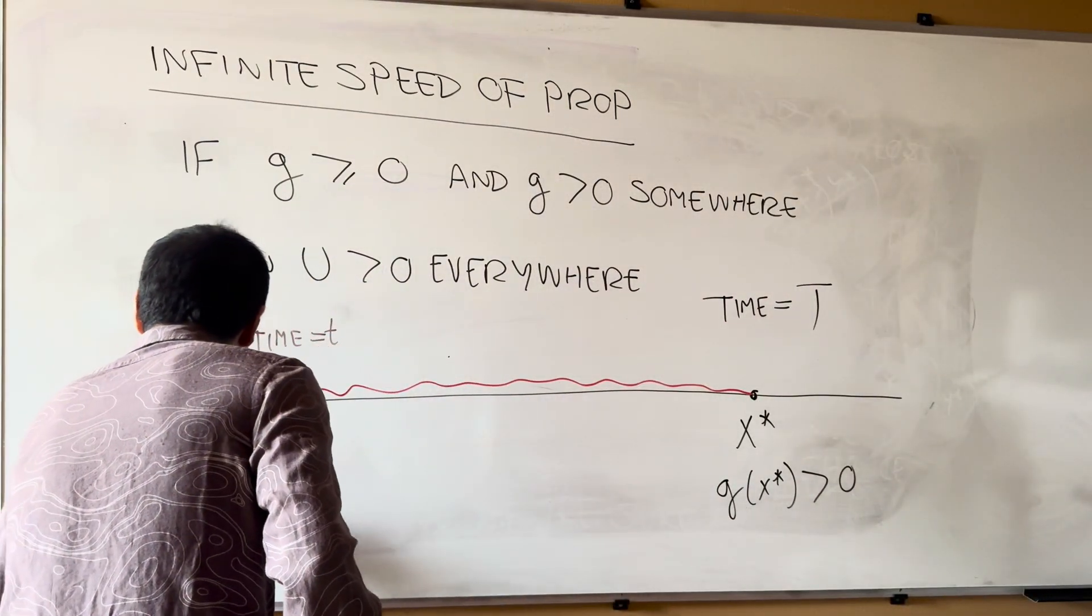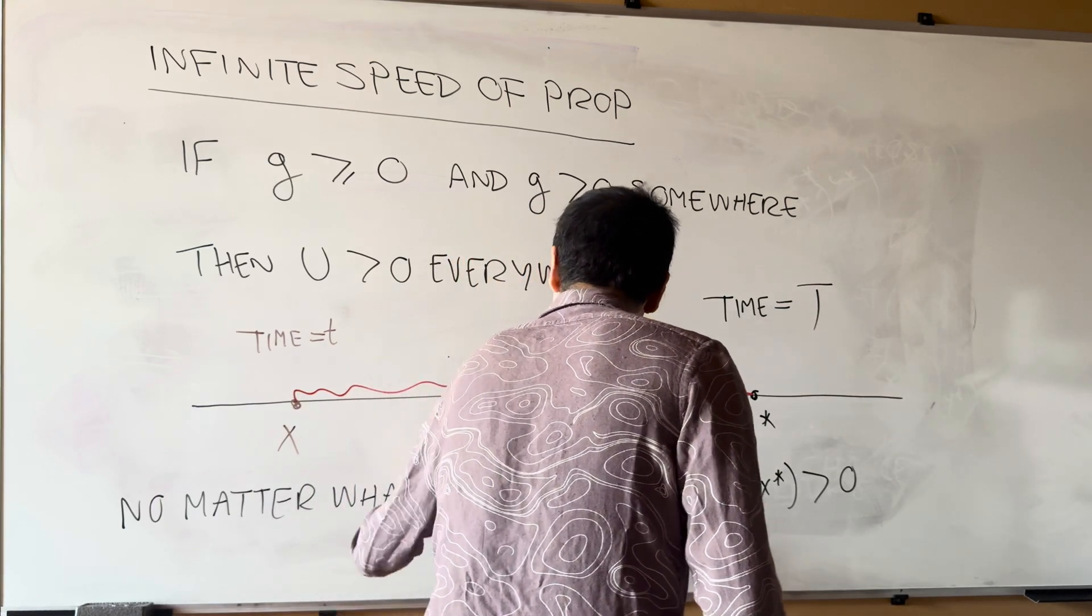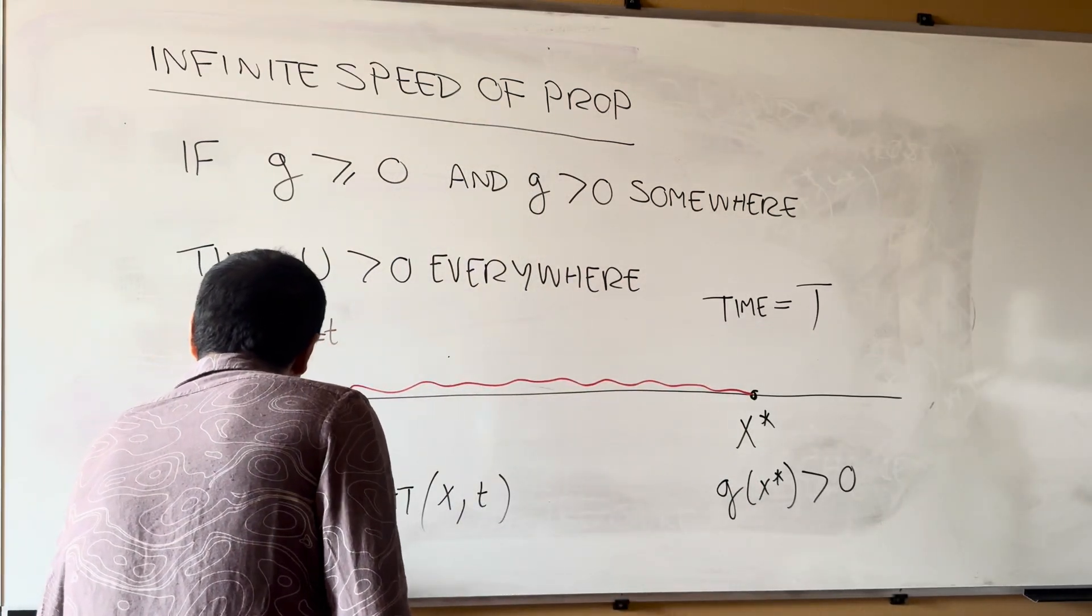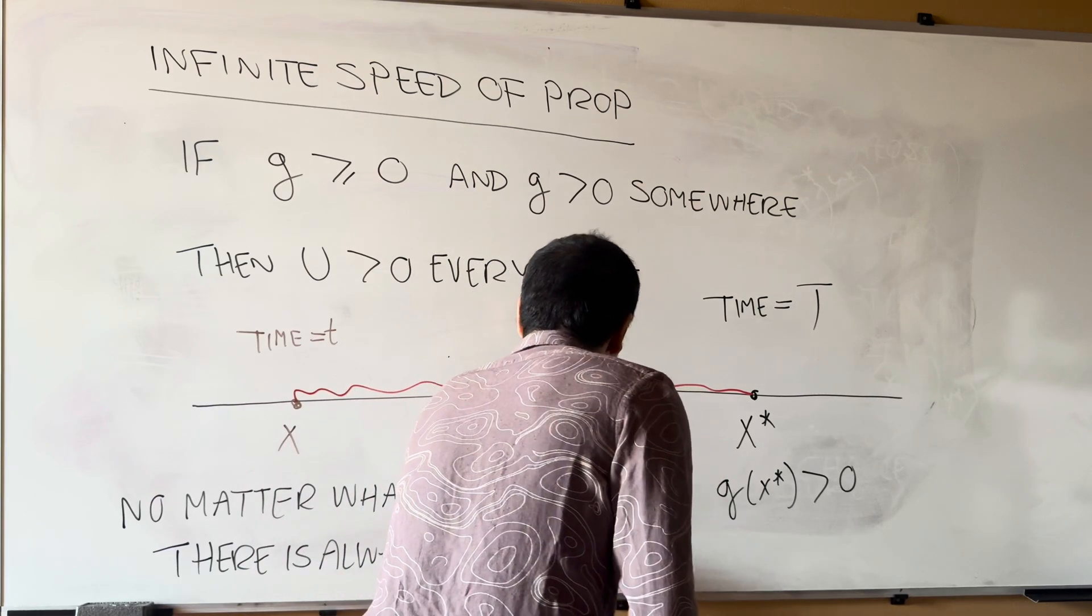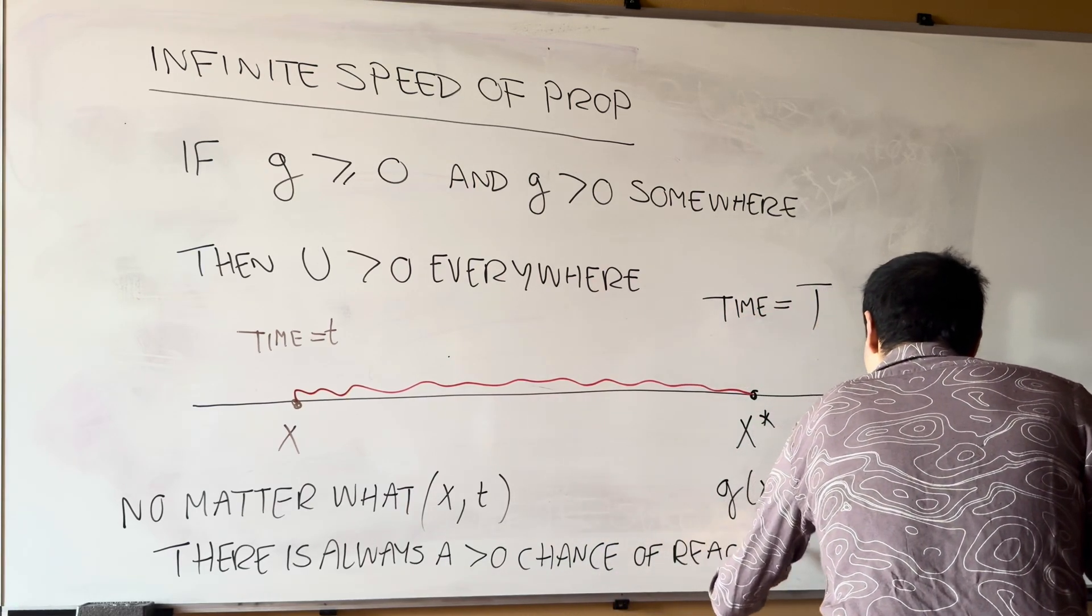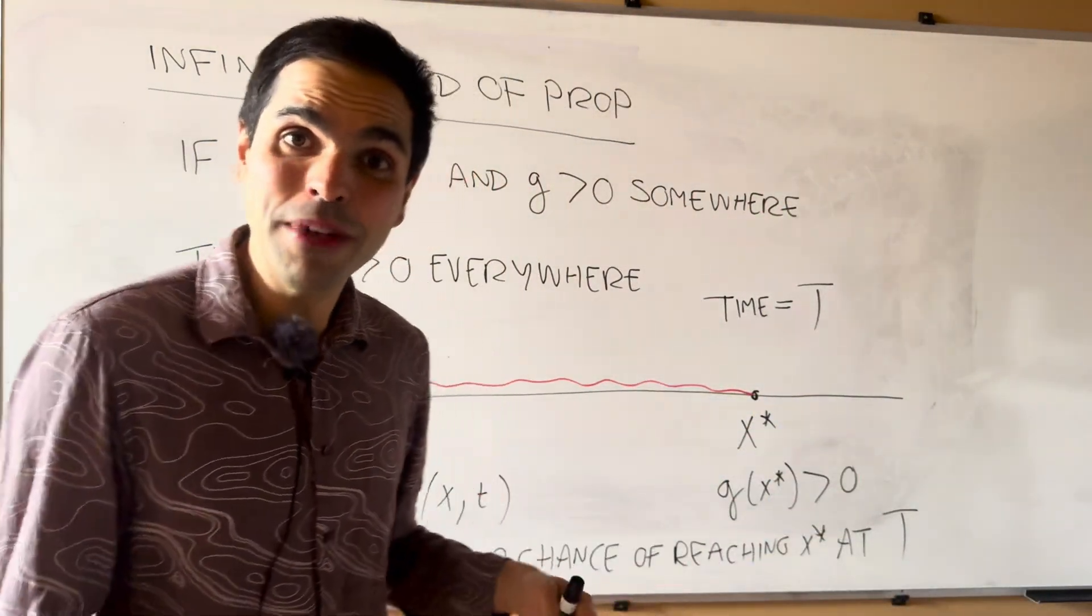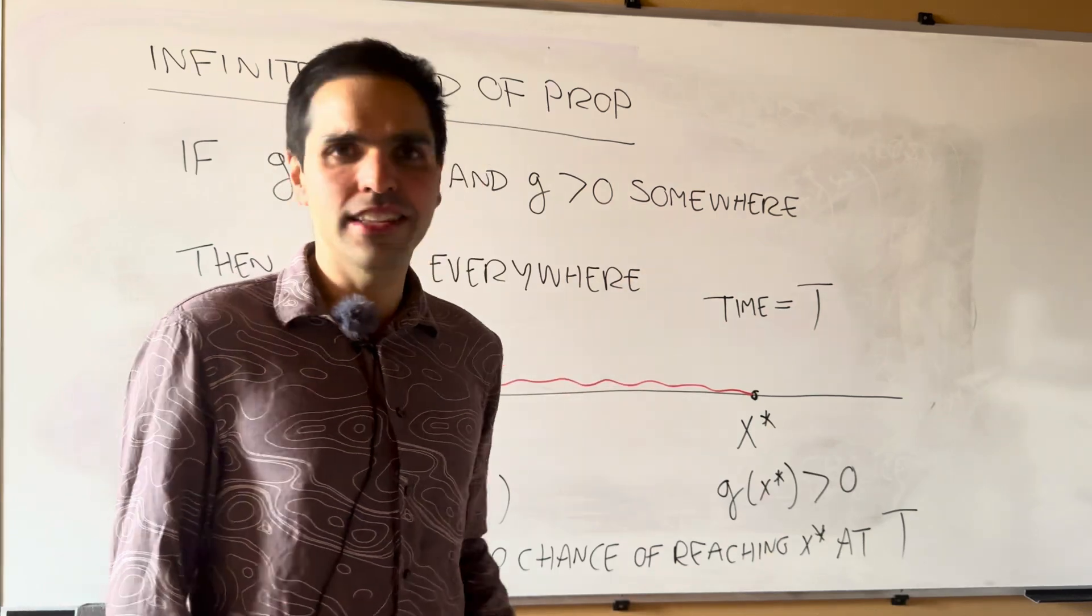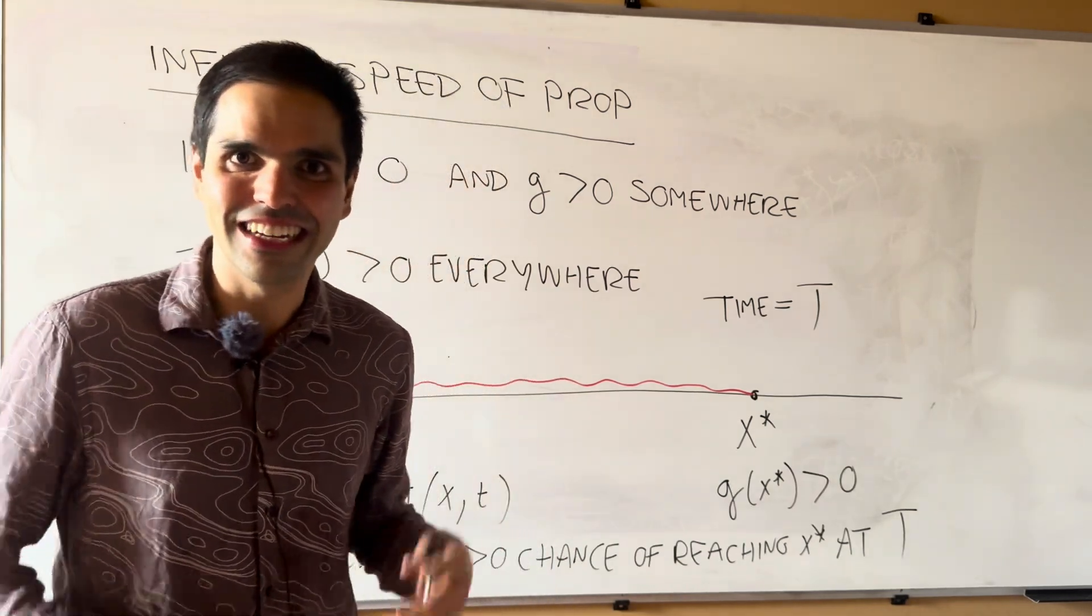So, once again, no matter what starting position and time, x t, there is always a positive chance of reaching x star at time T. In other words, you will always be able to find a runner that's so fast that they can reach x star at the time capital T. And not only one runner, but really infinitely many runners, which is really, really insane if you think about this.